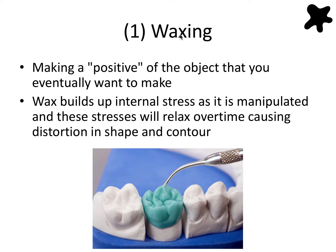Step one, after making the die and ditching it and painting on the die spacer, is waxing. Waxing involves making a positive of the object that you eventually want to make, so we're building the crown on the die out of wax. Wax is a great material because it can be easily manipulated with hot and cold instruments and keeps its form when you're done. Waxing teeth is often one of the first things dental students do in the sim lab — dreaded at first but can become quite enjoyable after some practice.